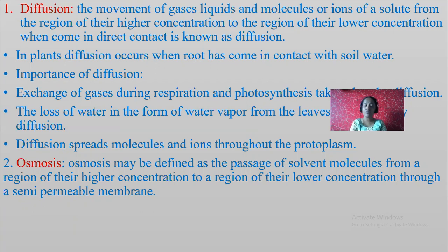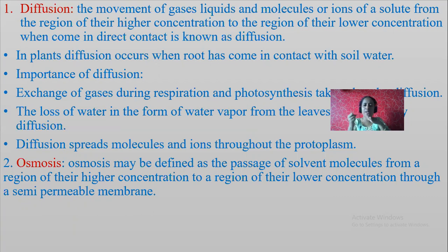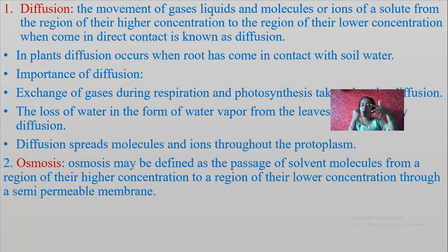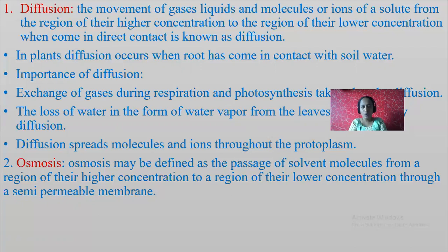In plants, diffusion occurs when root hairs come in contact with the soil. Water concentration is always high in the soil, but in the roots the water concentration is less. So water movement takes place from the soil towards the root, because diffusion always takes place from the region of higher concentration towards the region of lower concentration. They should be in contact.